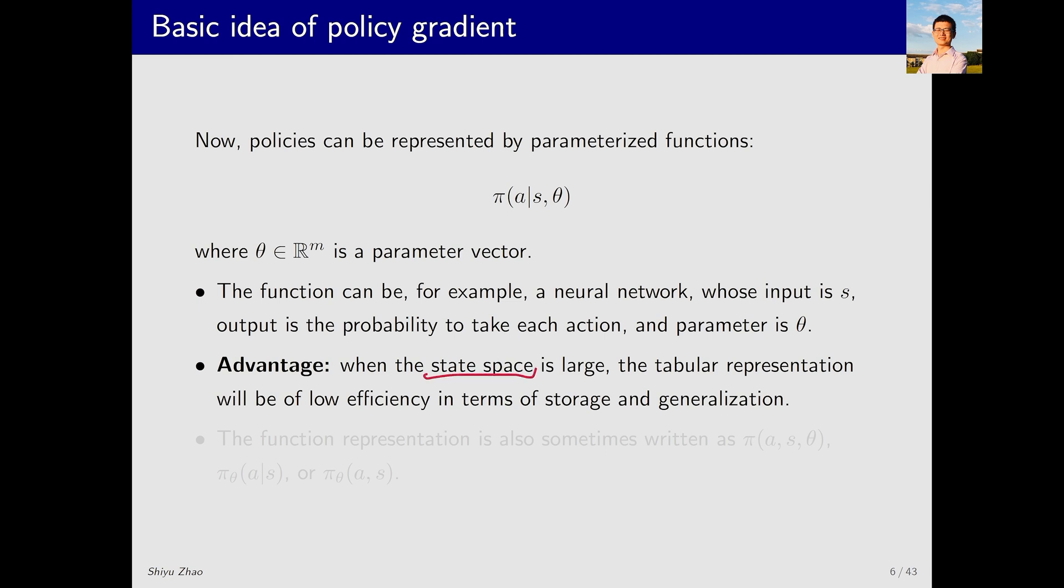The benefit of replacing a table with a function is similar to what we discussed with value function methods. For instance, if the state space is very large or even continuous with infinitely many states, the tabular representation becomes impractical. This issue manifests in two ways: first, in terms of storage, I may need to store a large number of values; second, in terms of generalization ability, the function representation performs better. Let me briefly explain what generalization means in this context. For example, if I want to update π(a,s) with a table, I need to directly access both s and a to update π(a,s). However, with a function, this is not necessary. If I update one entry, say (s,a), the neighboring entry, say (s',a'), will also be updated. This is because when I modify the parameters of the function, it will simultaneously adjust the values for nearby states and actions. This means that by using fewer data points and less direct access, I can still achieve better results. This is what we refer to as generalization.